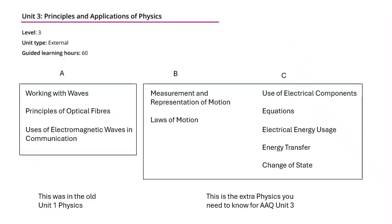The AAQ has roughly three times more content — lots more physics, chemistry, and biology. For physics specifically, there are now sections A, B, and C. Section A matches what was in the old BTEC — waves, optical fibers, digital stuff, and communication with waves. Section B covers lots of mechanics with quite a bit of maths, and Section C covers electricity and energy-related topics including changes of state.